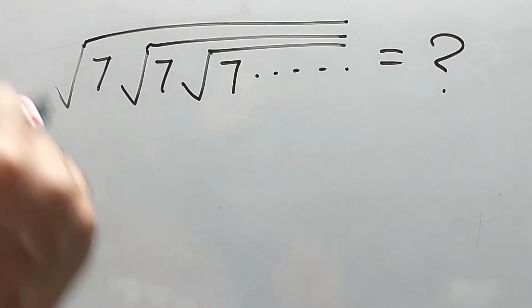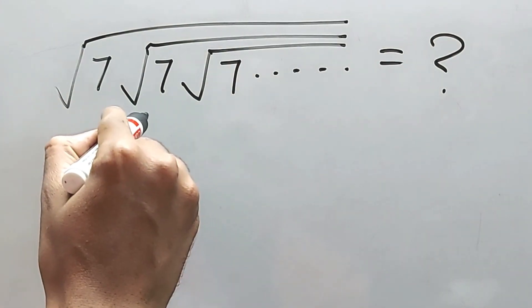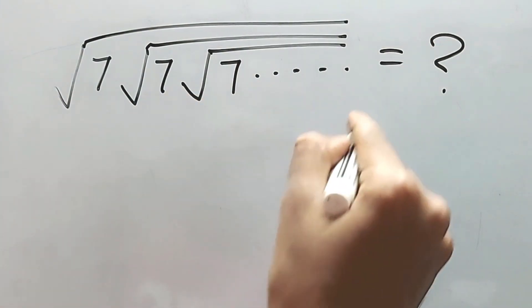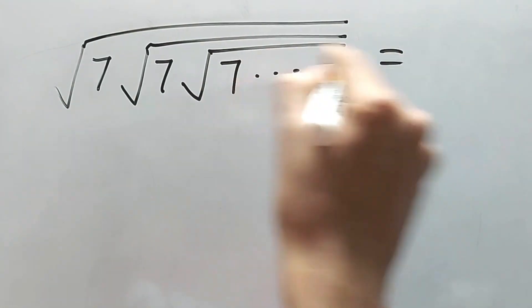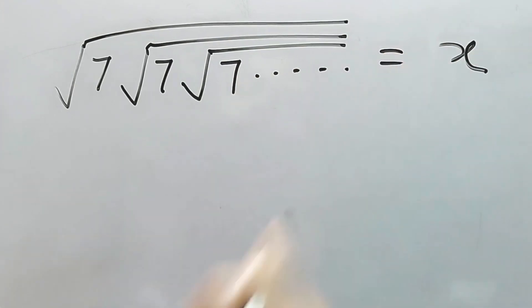So, let us find the value of square root of 7 inside square root of 7, square root of 7 and so on up to infinity. So, how do we find this? Let us assume this one is equal to x.